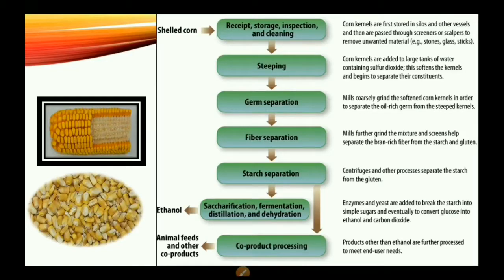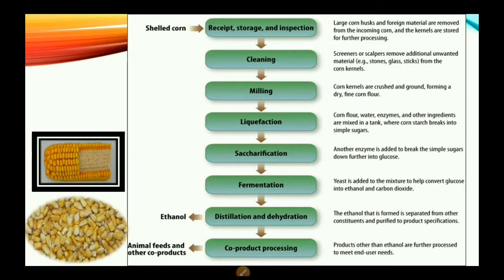Next we have fiber separation, then starch separation. At the starch separation stage, ethanol can be made. If ethanol is not desired, the next step is co-product processing, where products are made into animal feeds.